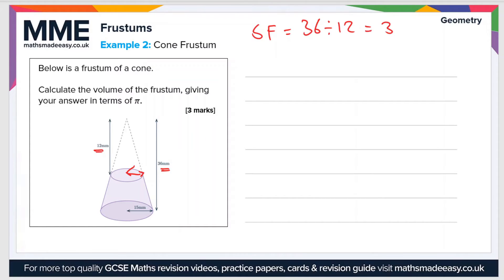Now we can work out the radius of the smaller cone. The radius of the smaller cone is the radius of the large cone — 15 — divided by the scale factor of 3, which gives us 5. So the smaller radius is 5 millimeters. That's all the information required to answer the question.